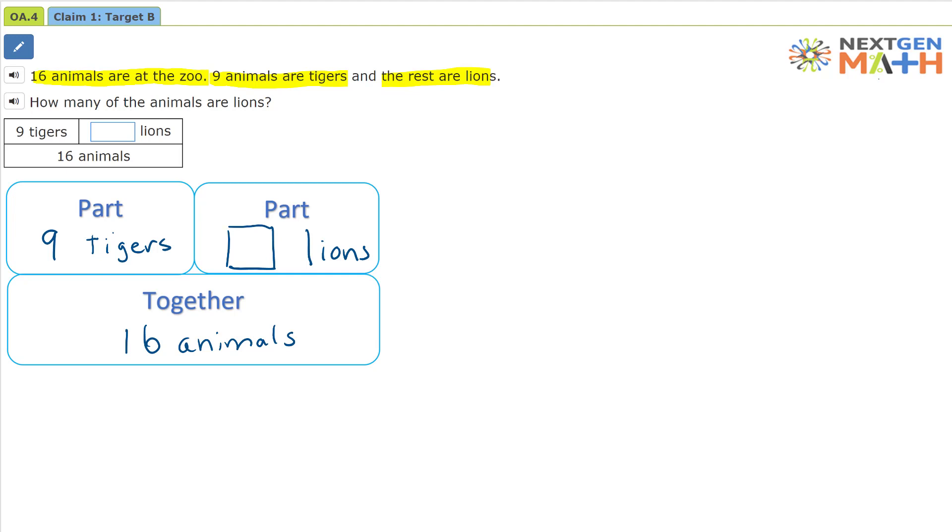And the question is, how many of the animals are lions? So we know that the top row, 9 plus that unknown number, is equal to 16, or the bottom row. So we know 9 plus our unknown number equals 16.